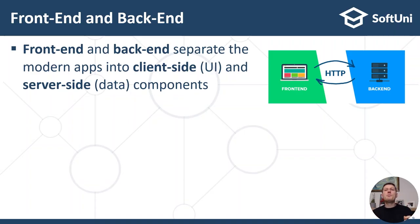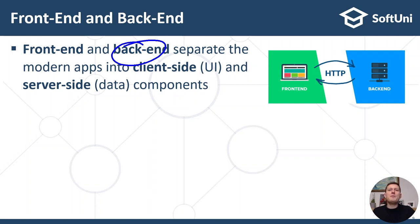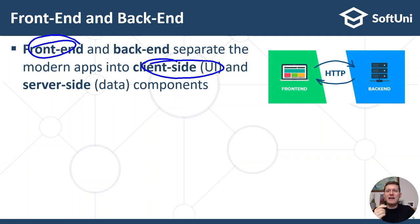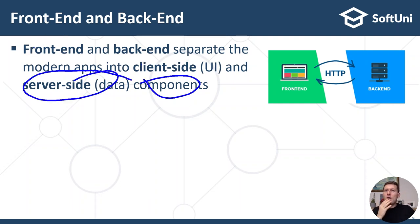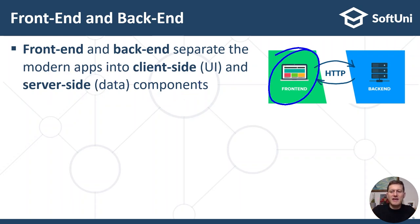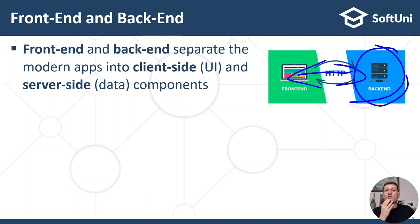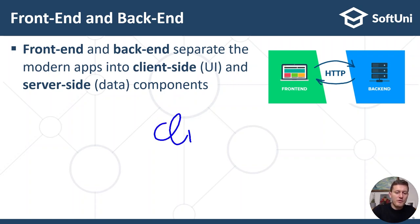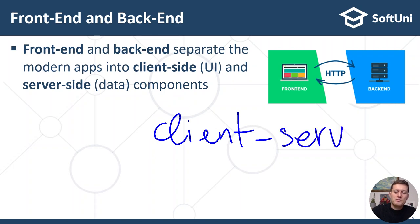Front-end and back-end are important concepts in software development. They separate the modern app into client-side — the user interface — and server-side — the data processing components. Almost all connected software we use every day has a front-end and a back-end, connected with some protocols. The front-end and back-end come from the client-server model and are a special form of this model.